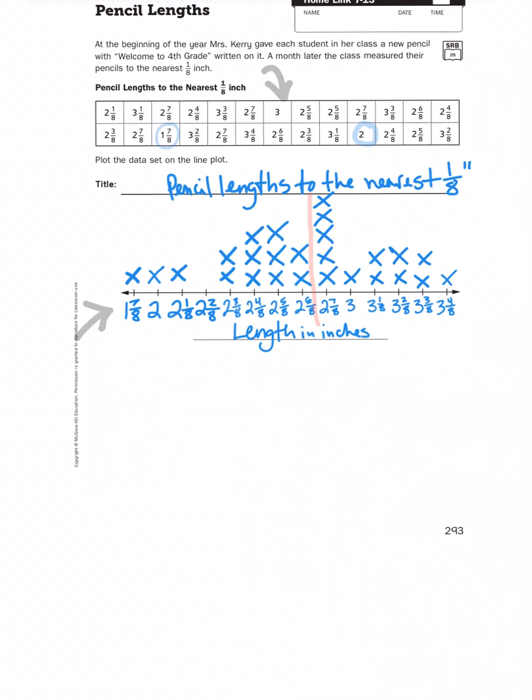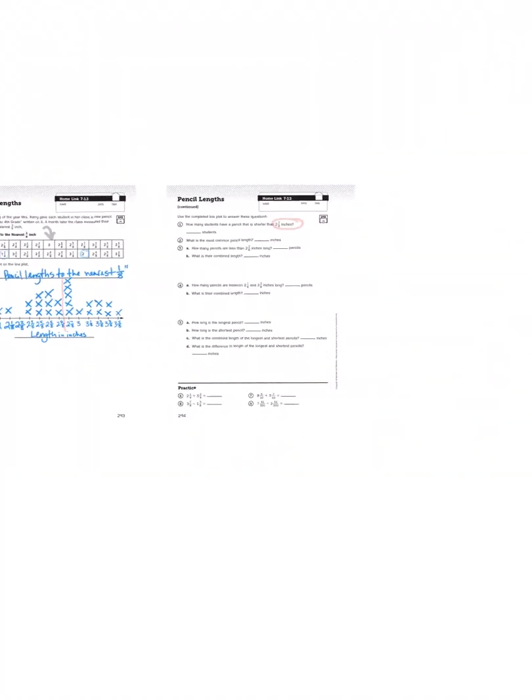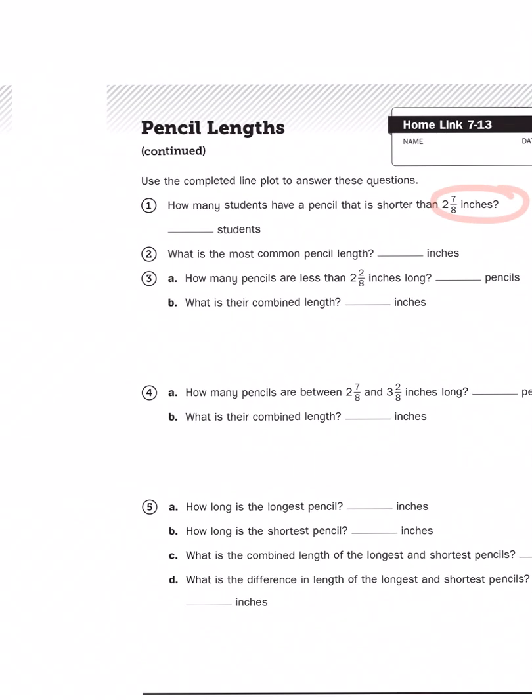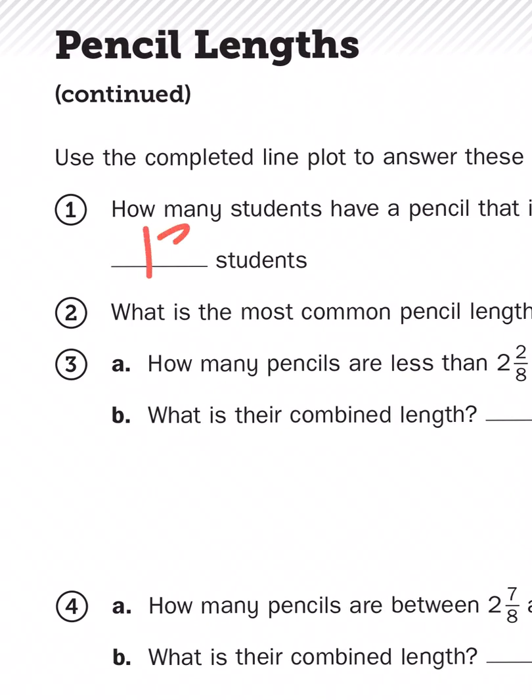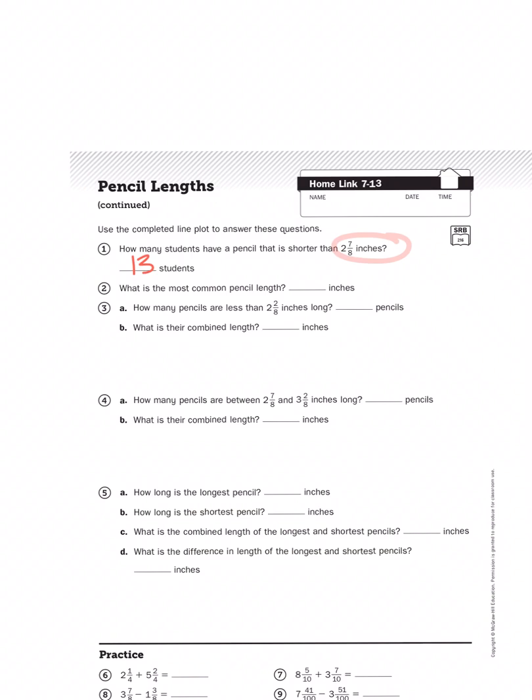1, 2, 3, 4, 5, 6, 7, 8, 9, 10, 11, 12, 13. Yep. There are 13 x's, so that means 13 students had a pencil that was less than or shorter than 2 7/8 inches.